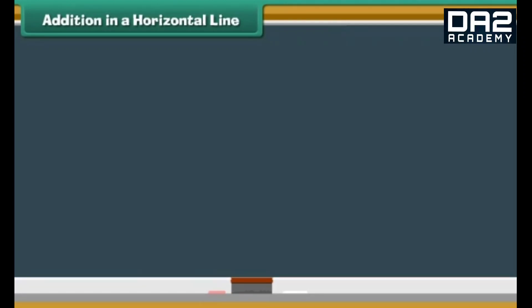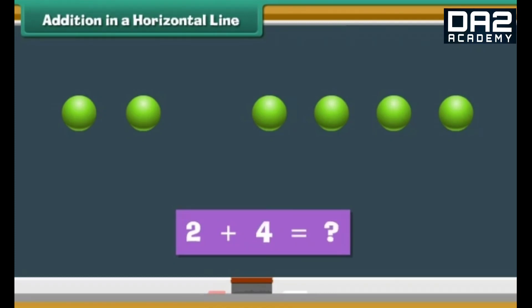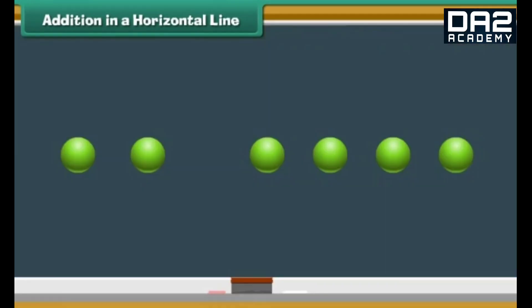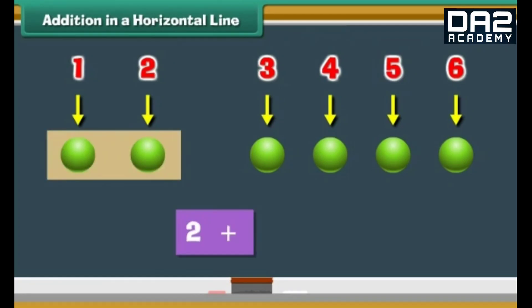Addition in a horizontal line. Let us now use dots to add numbers horizontally. Look at the screen. There are two dots on the left and four dots on the right. What is two plus four? Count the total number of dots: 1, 2, 3, 4, 5, 6. Therefore, two plus four is six.